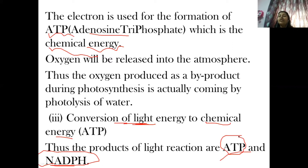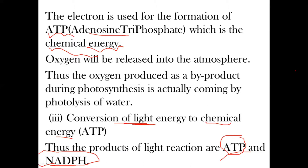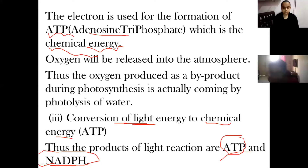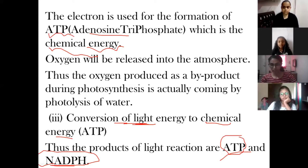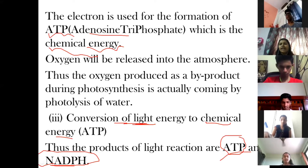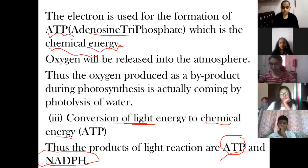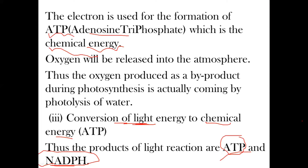What are the plants going to do with these products, ATP and NADPH? You will understand that in the second step of photosynthesis that we will be discussing. Till here, does anyone have doubts? If you have understood, give me a thumbs up. If you have doubts, just message me.